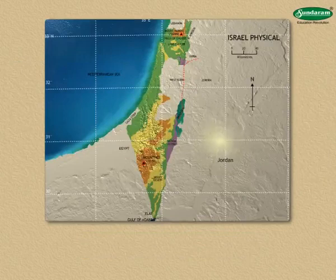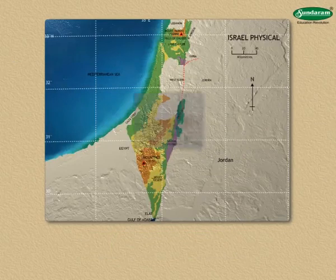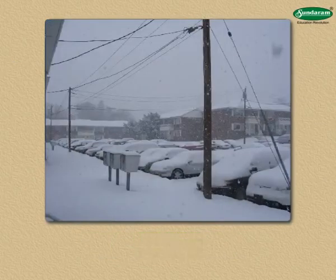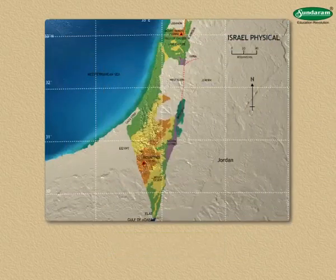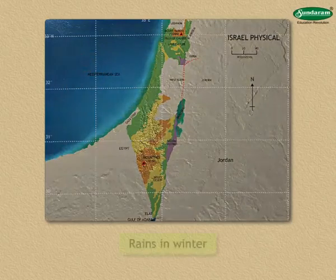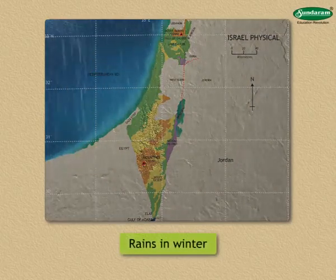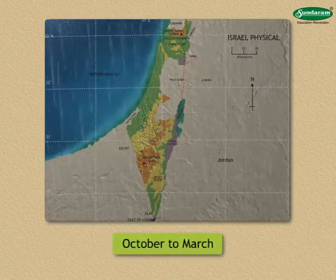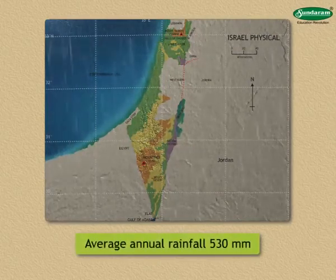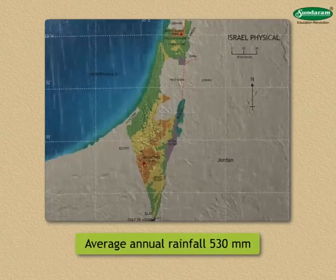The temperature is normally high in the valley of the Jordan River and Negev Desert, which are away from the seacoast. The climate in winter is cool and pleasant. Sometimes there is snowfall in the higher parts of the Galilee mountain. As this country lies in the Mediterranean climate region, it rains mainly in winter, generally from October to March. The average annual rainfall is 530 mm.